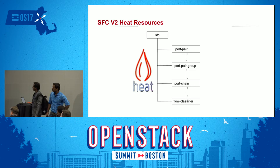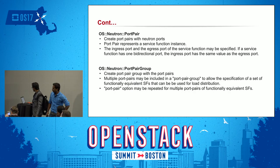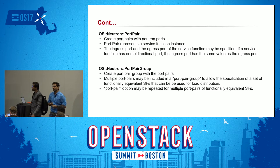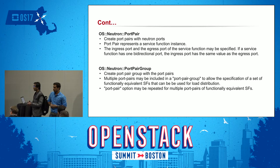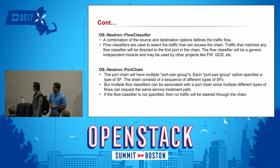To get an up-and-running SFC service, you need to deploy four different Heat resources: port pair, port pair group, port chain, and flow classifier. To get a service function instance, you must create a port pair corresponding to each service function. A port pair is essentially a Neutron port where you specify your ingress and egress port corresponding to your service function instance. The port pair group is a collection of port pairs that helps you scale your service function instances, and you can distribute packet load via port pair group.